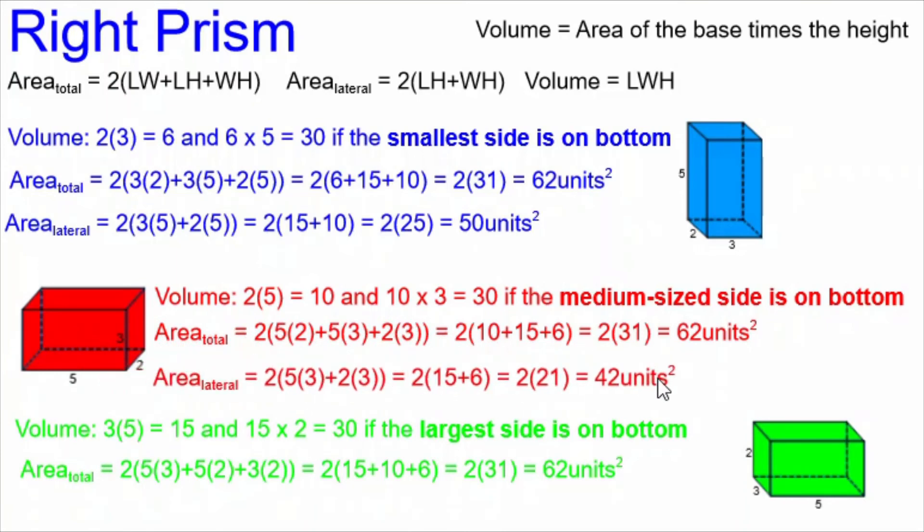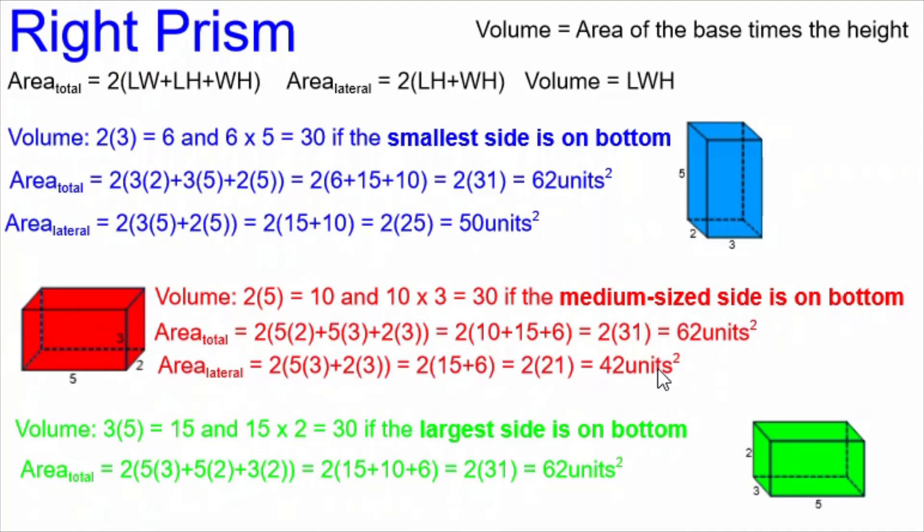With the medium sized side on the bottom, we have 2 times 21 for 42 units squared. The lateral area is different this time.